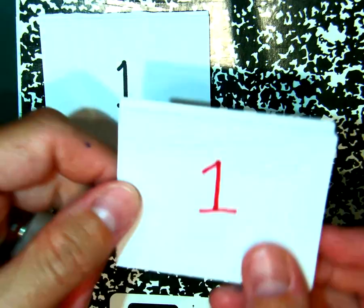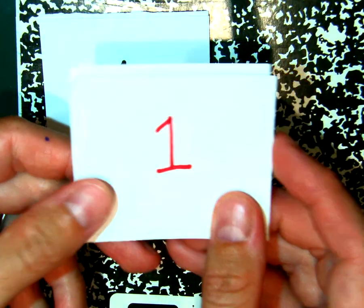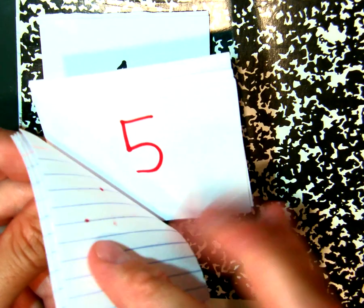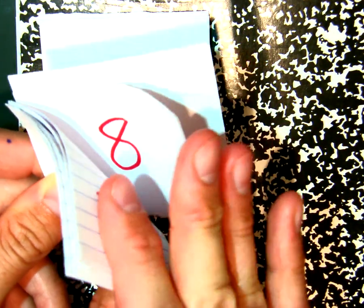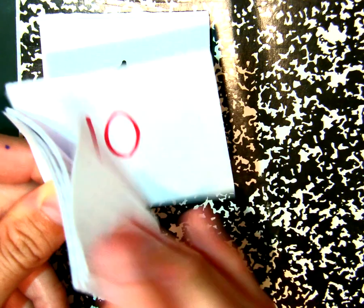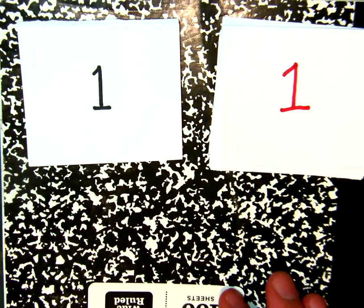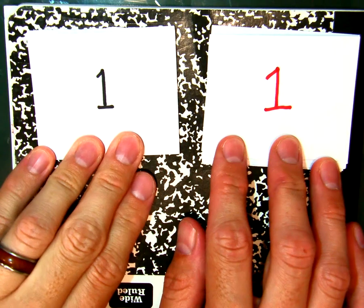I'm going to take the remaining 10 and number them 1, 2, 3, 4, 5, 6, 7, 8, 9, and 10. I'm going to have two sets of 10 of my little mini cards.